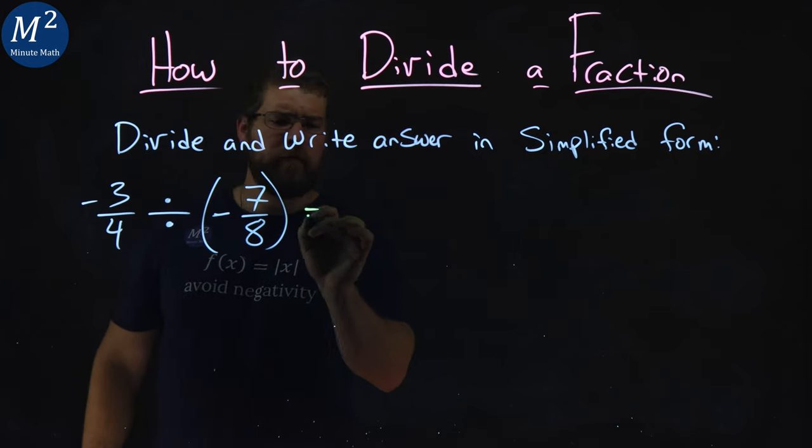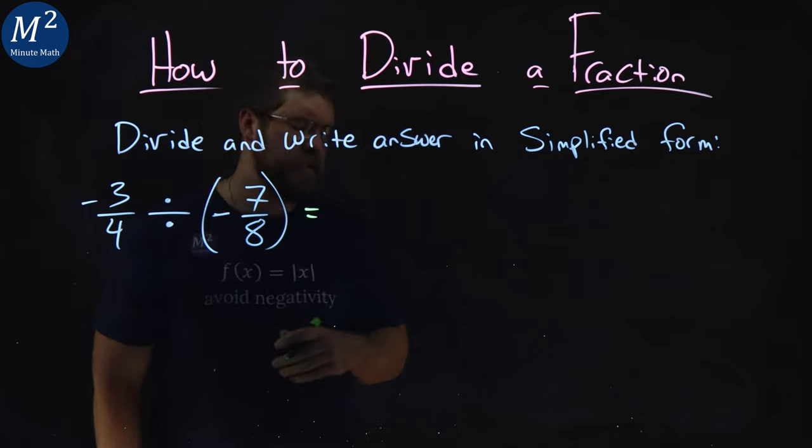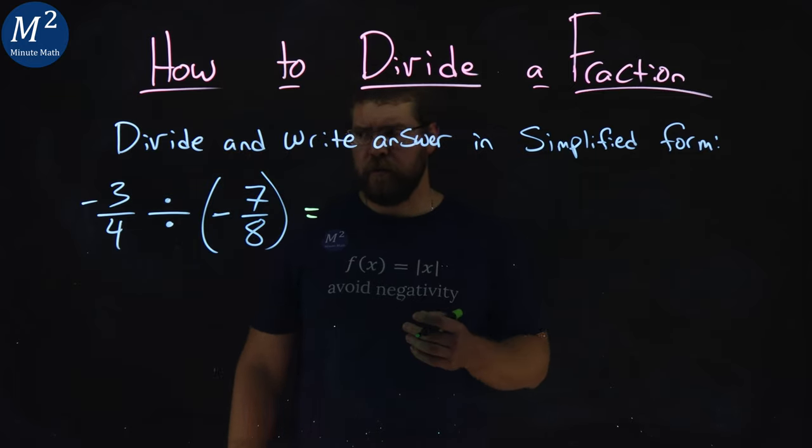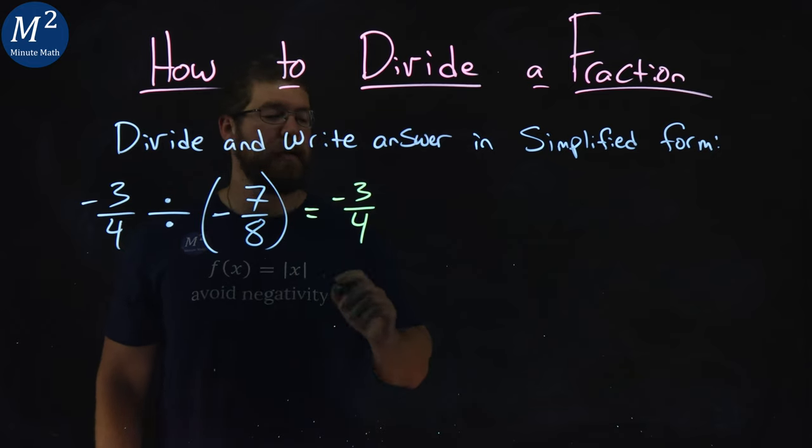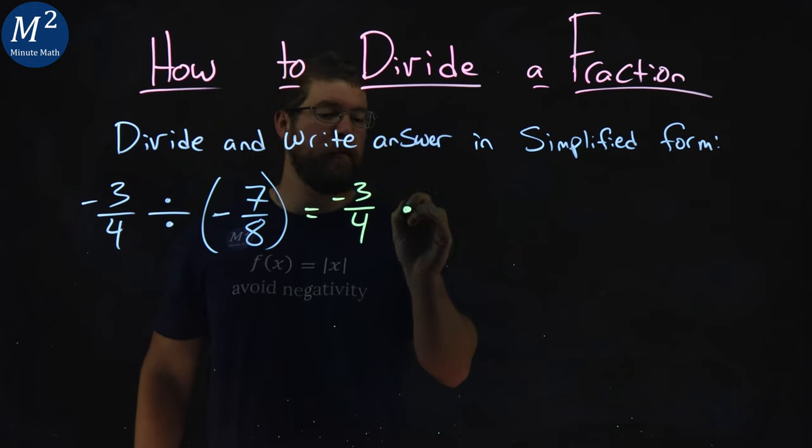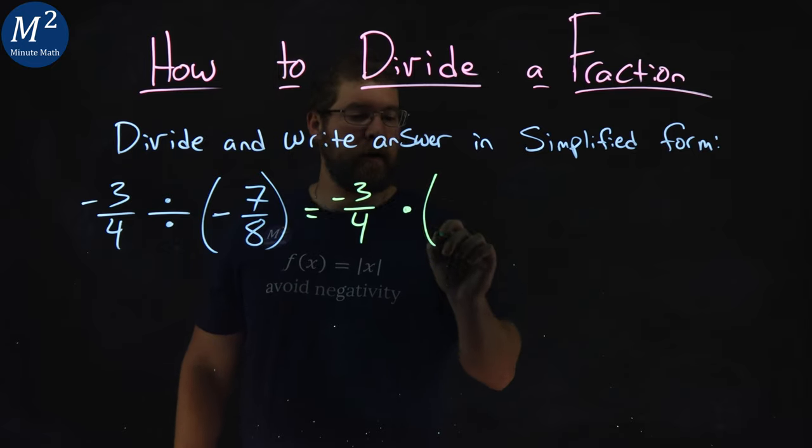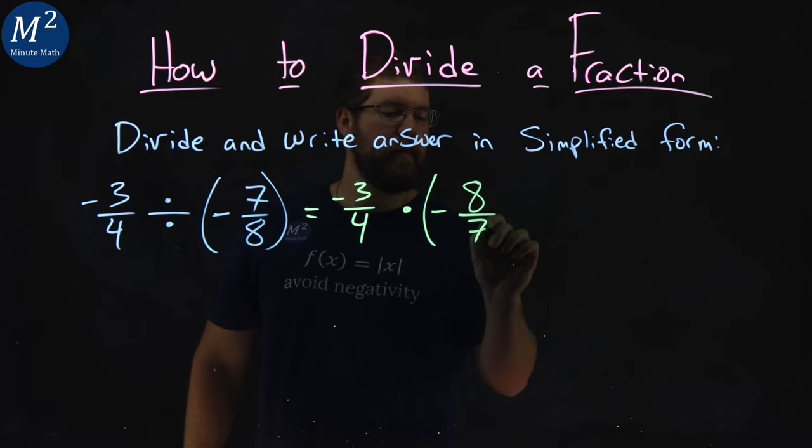Well, we said this before, but division of a fraction is the same as multiplying the fraction's reciprocal. So negative three-fourths divided by negative seven-eighths is the same as negative three-fourths multiplied by negative eight-sevenths.